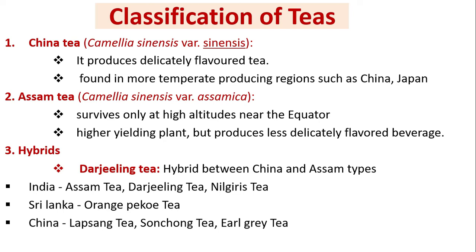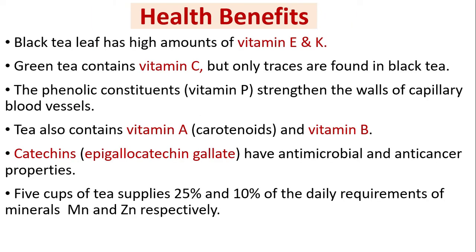Health benefits of tea: Black tea leaf has high amounts of vitamins E and K. Green tea contains vitamin C, but only traces are found in black tea. The phenolic constituents — vitamin P — strengthen the walls of capillary blood vessels. Tea also contains vitamin A (carotenoids) and vitamin B. Catechins, especially epigallocatechin gallate, have antimicrobial and anti-cancer properties.